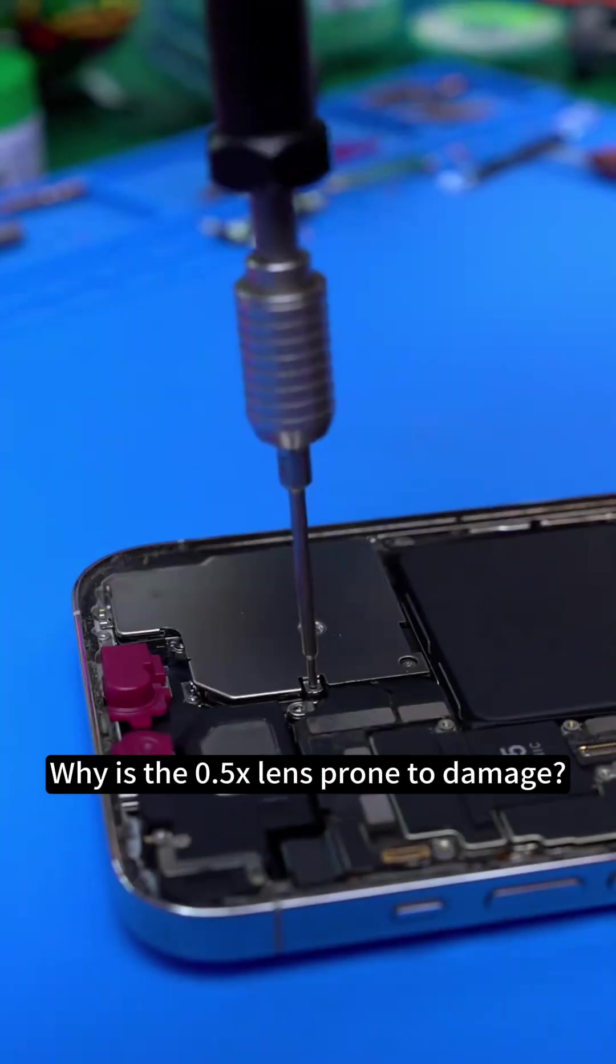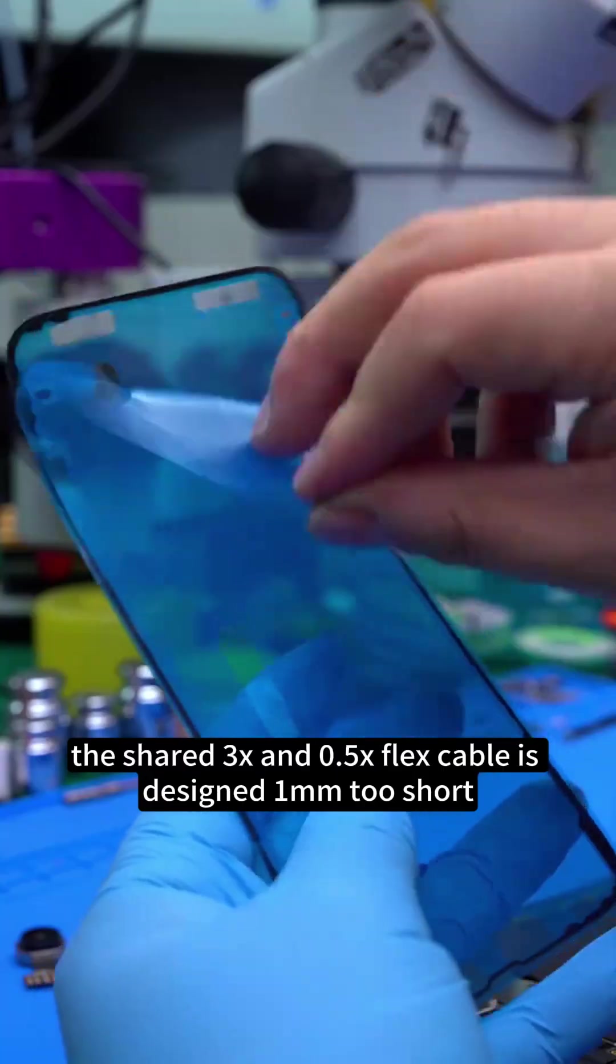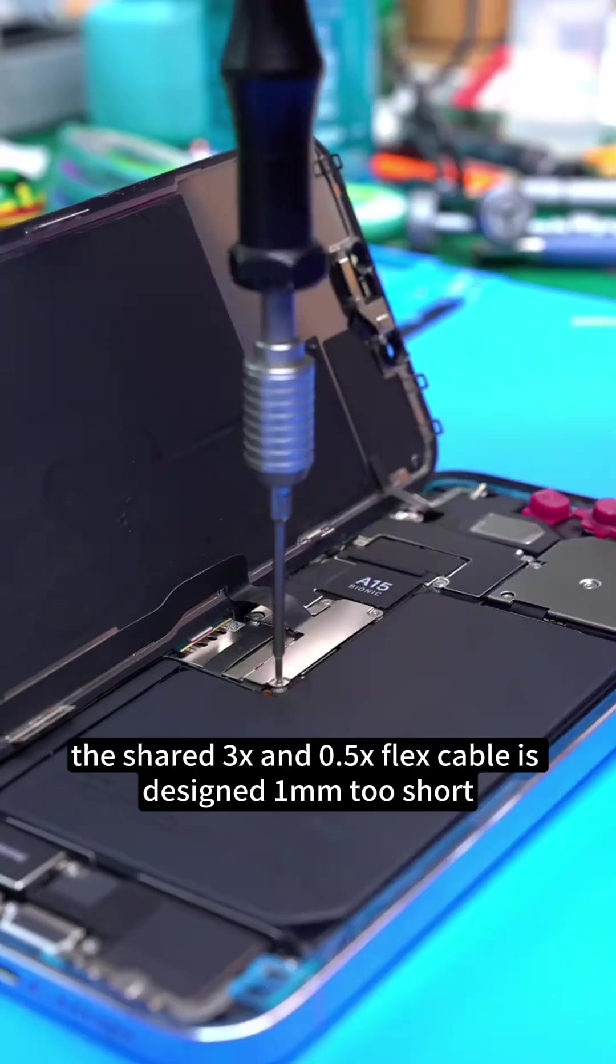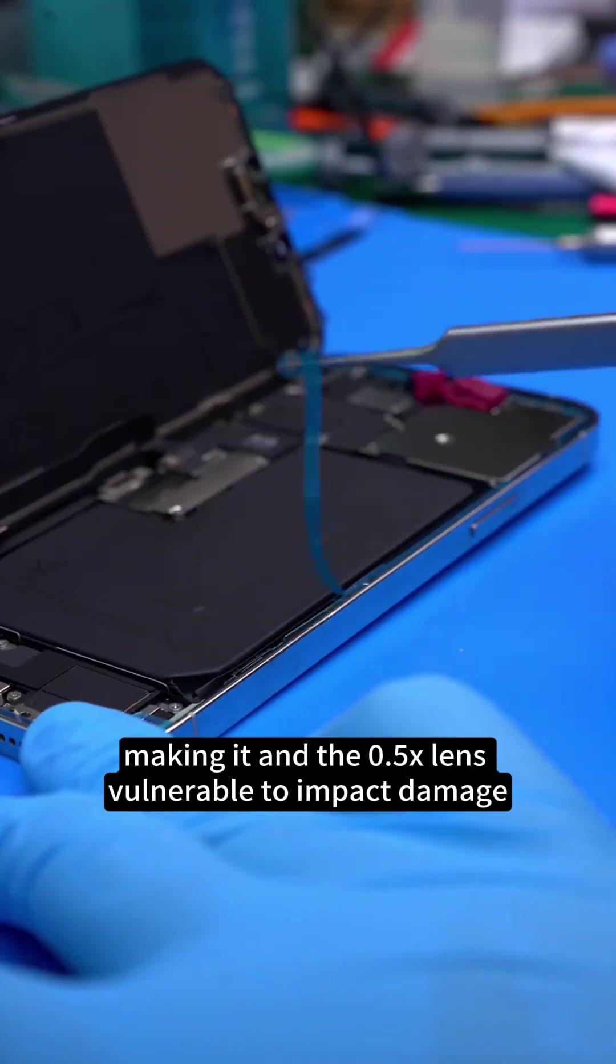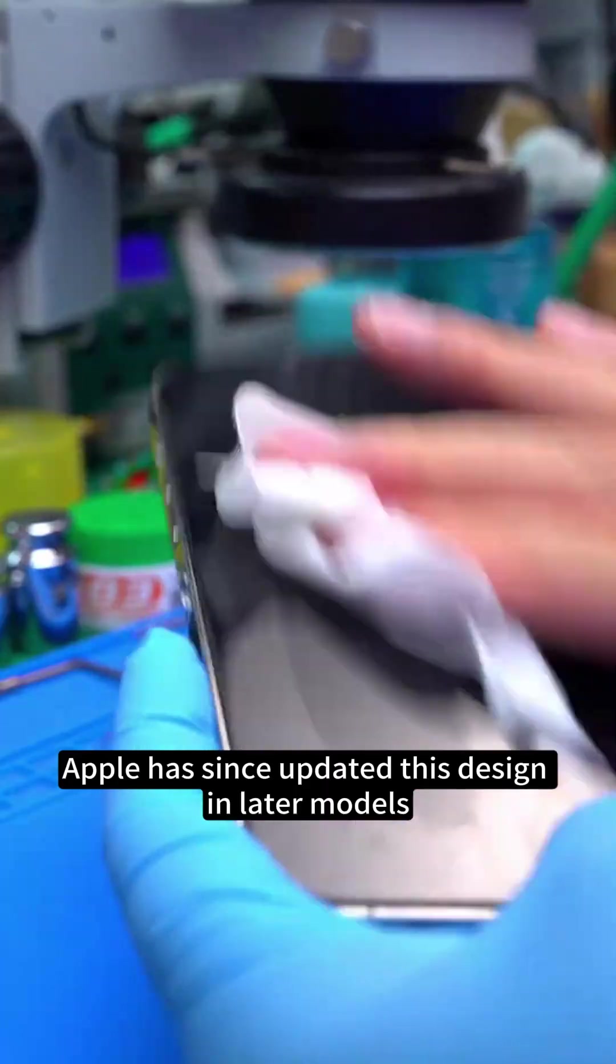Why is the 0.5x lens prone to damage? The root cause: the shared 3x and 0.5x flex cable is designed one millimeter too short, making it and the 0.5x lens vulnerable to impact damage. Apple has since updated this design in later models.